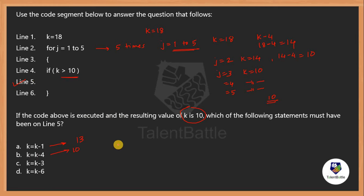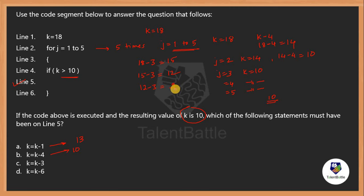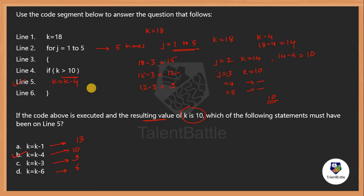Cross-checking other options: k equals k-3 gives 18, 15, 12, then 9 — the value becomes 9, not 10. And k equals k-6 would give 6. So the correct replacement for line number 5 is k equals k minus 4, which is option B. The final resulting value is 10 as expected.